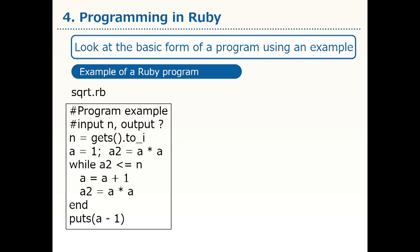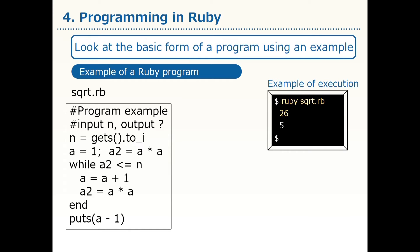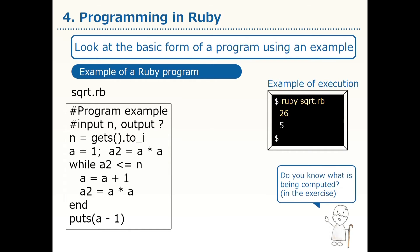Let's look at the basic form of a program using an example of a Ruby program. This is an example of a Ruby program, and this is an example of its execution. We will consider what kind of computation it's actually doing in the exercise session. This program has various sentences and formulas, and this gray part is the part that actually performs computations. We will soon study these commands, but before this, let's see the general rules of programs.